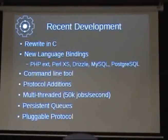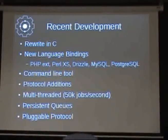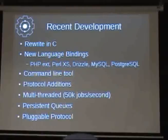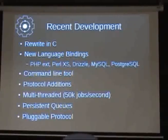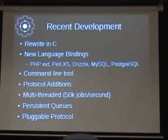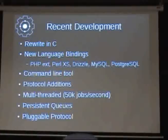The need for a C rewrite was speed. The Perl version is not very efficient — it does a lot of excessive memory copies, and the socket IO code is within the Perl implementation. We also wanted to start expanding it in ways we wouldn't have been able to in Perl. We've developed a number of new language extensions: the PHP extension, the Perl XS module, user-defined functions so you can use this within something like Drizzle or MySQL, and Postgres support is coming very soon. There's also a command line tool so you can use Gearman from your shell prompt.